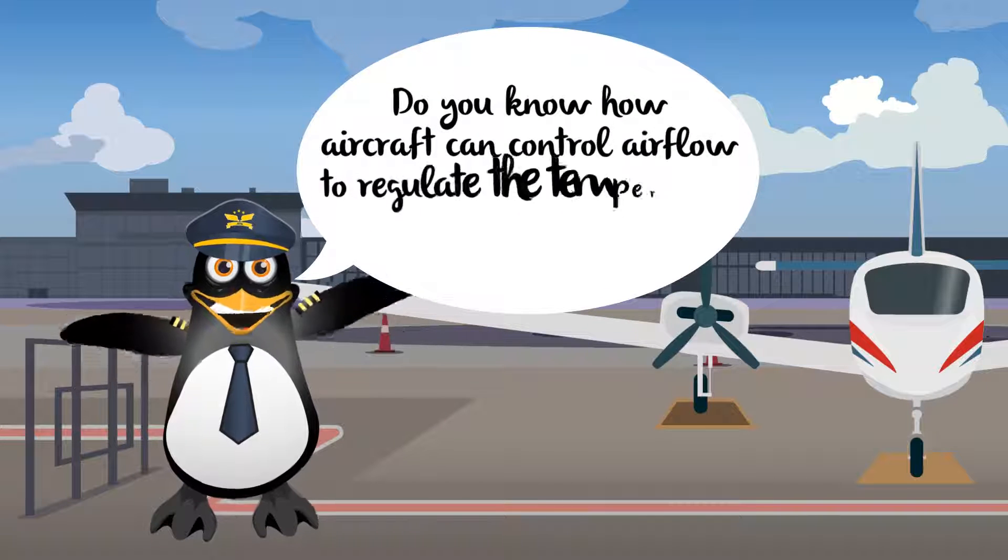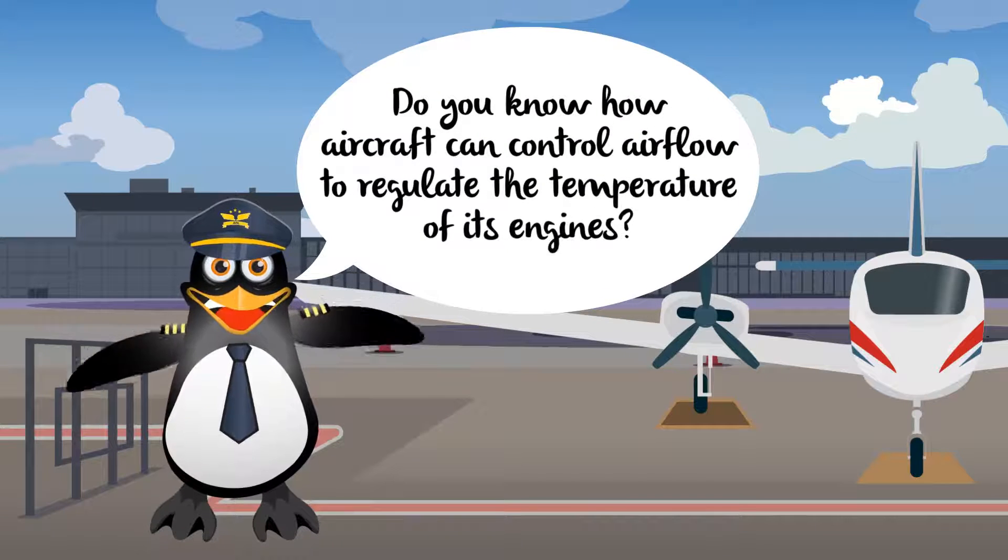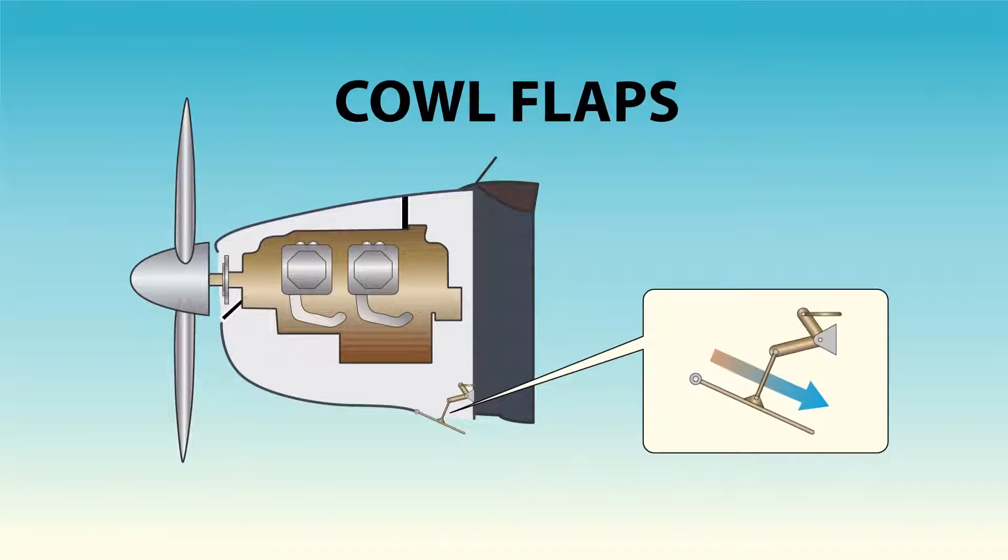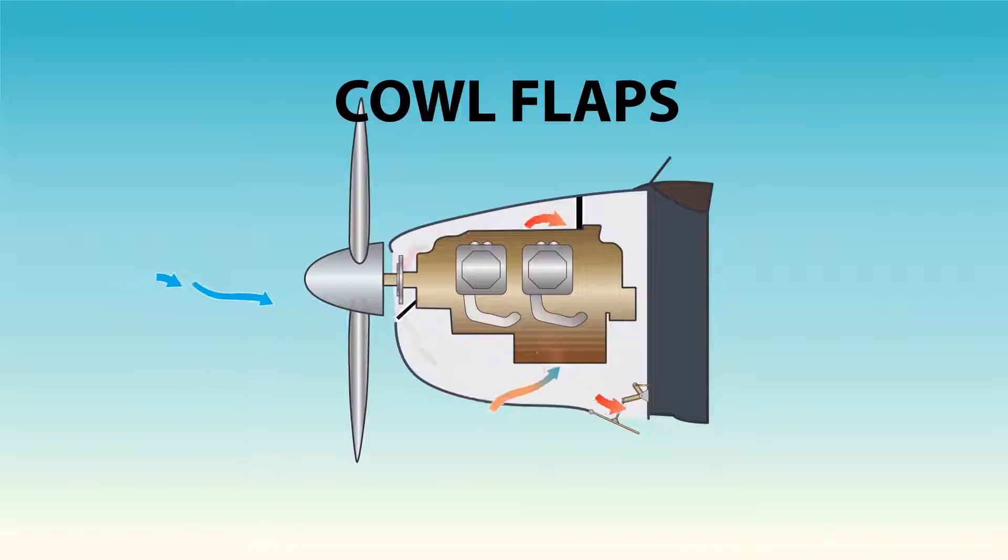Do you know how aircraft can control airflow to regulate the temperature of the engines? Air-cooled engines have devices called cowl flaps to introduce or restrict airflow to the engine to help control the temperature of its engine.